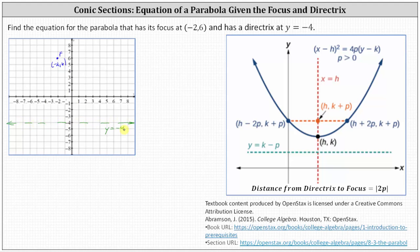Because we have a horizontal directrix and the focus is above the directrix, we should be able to recognize the parabola is going to open up as shown in the notes on the right. This indicates the equation is going to be in the form of the square of x minus h equals four p times the quantity y minus k, where h comma k is the vertex, and because the parabola opens up, p is greater than zero or positive.